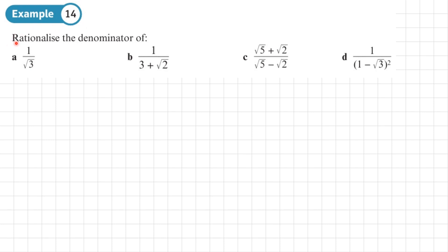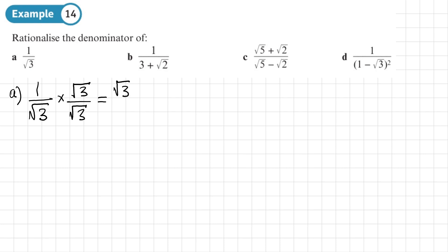Example 14. We need to rationalise the denominator of four fractions. Starting with part a, which is 1 over root 3. To rationalise this, we multiply the top and the bottom by root 3. We've just got a single surd in the denominator. So 1 times root 3 is just root 3, and root 3 times root 3 is 3. That one is done — we have a rationalised denominator.